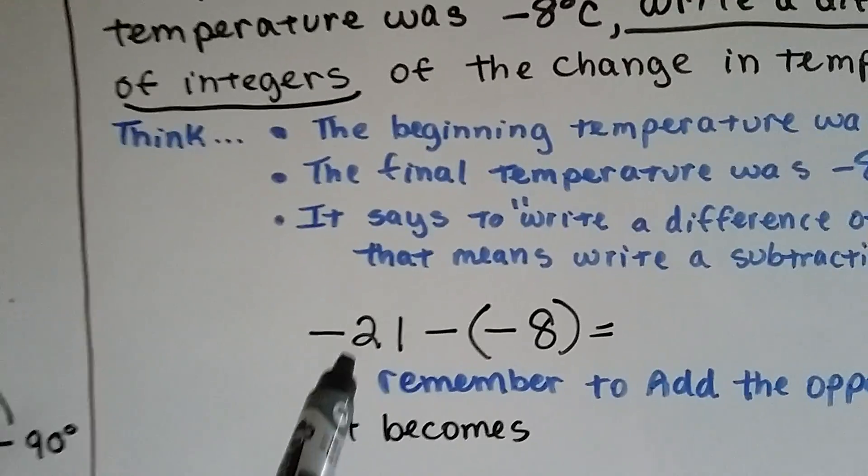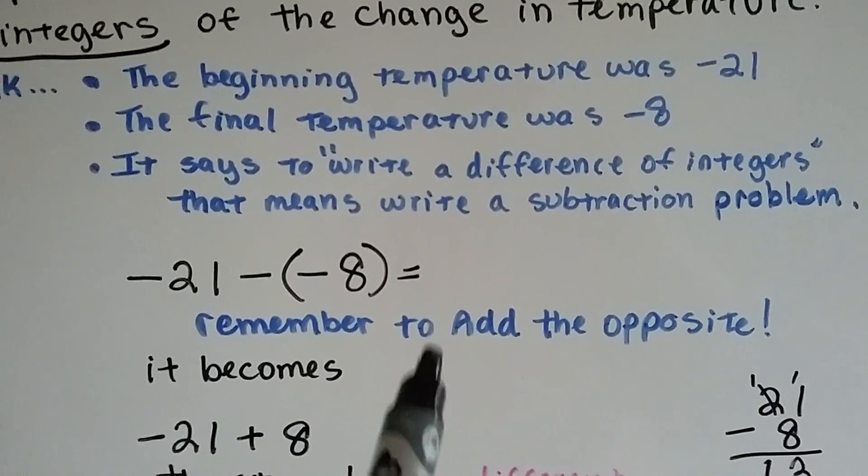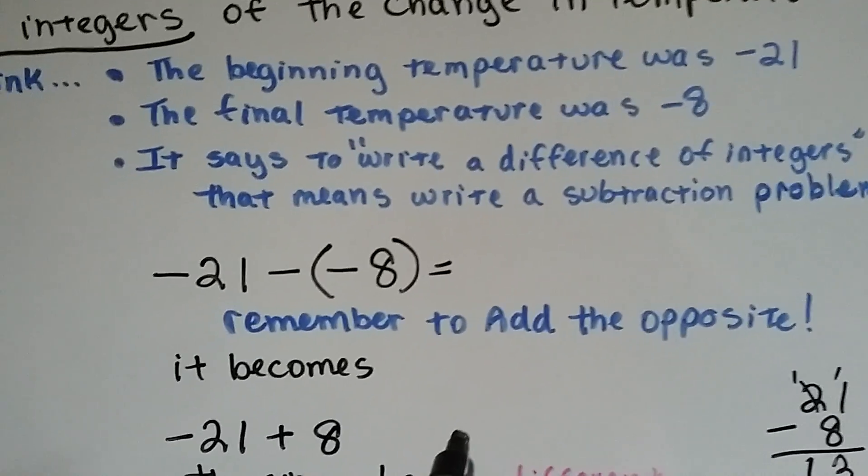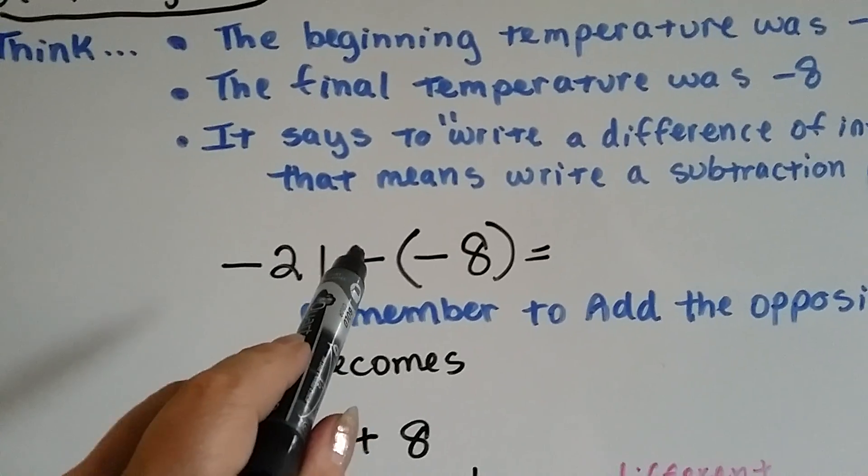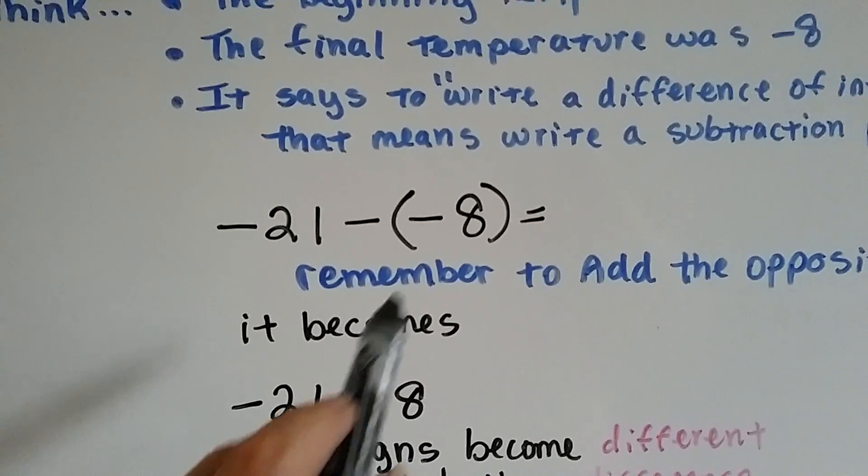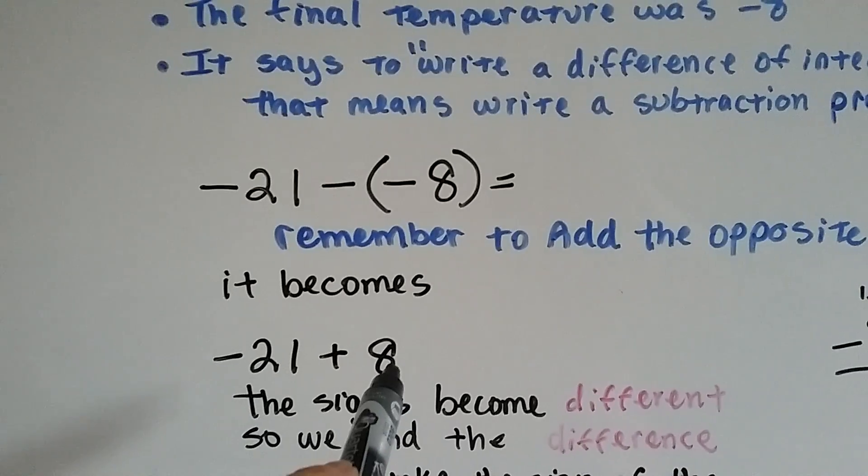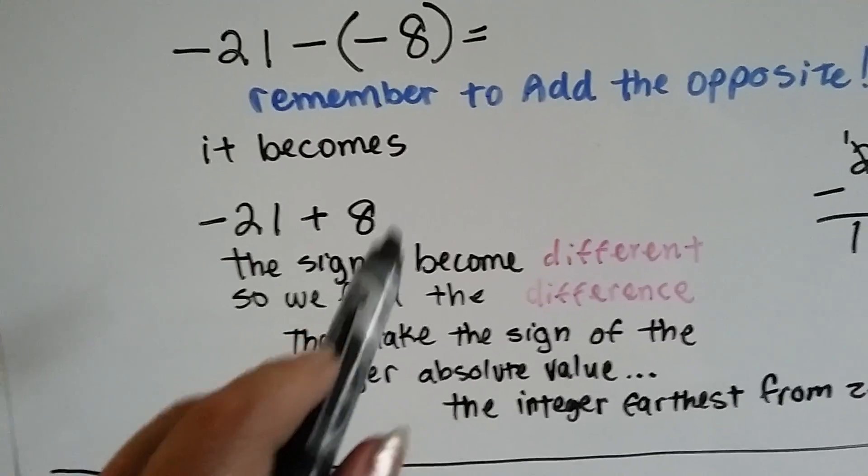All right. So we've got negative 21 minus negative 8. But remember to add the opposite. So, this minus sign is going to become a plus sign and that minus 8 is going to become a plus 8. Now we've got negative 21 plus 8.